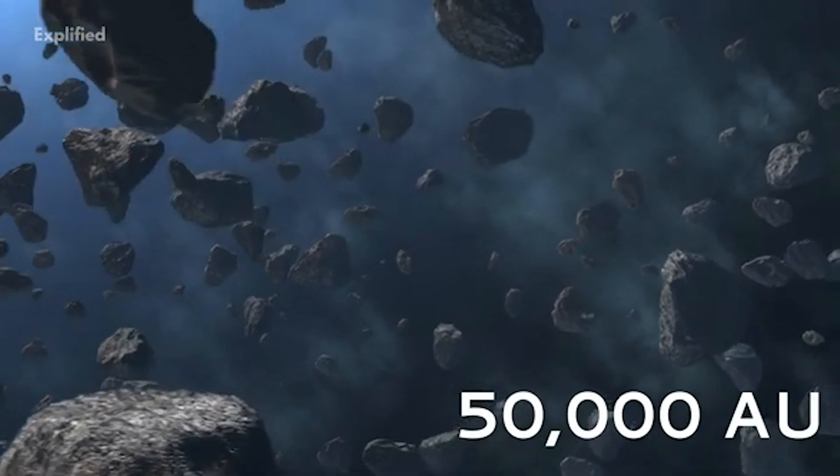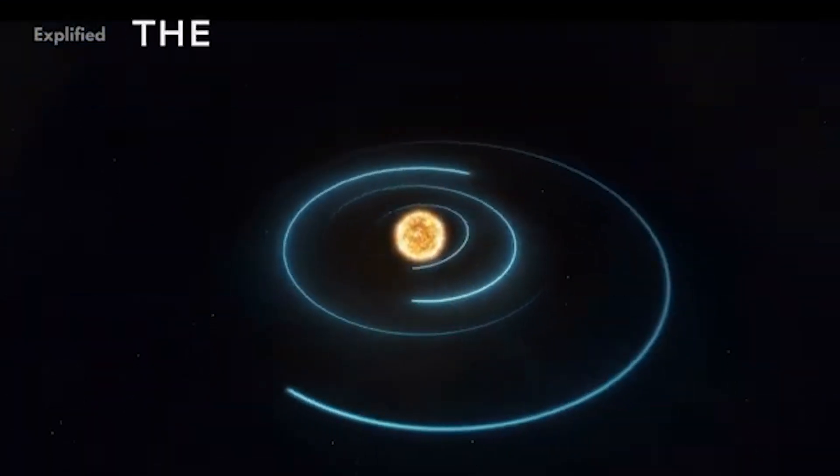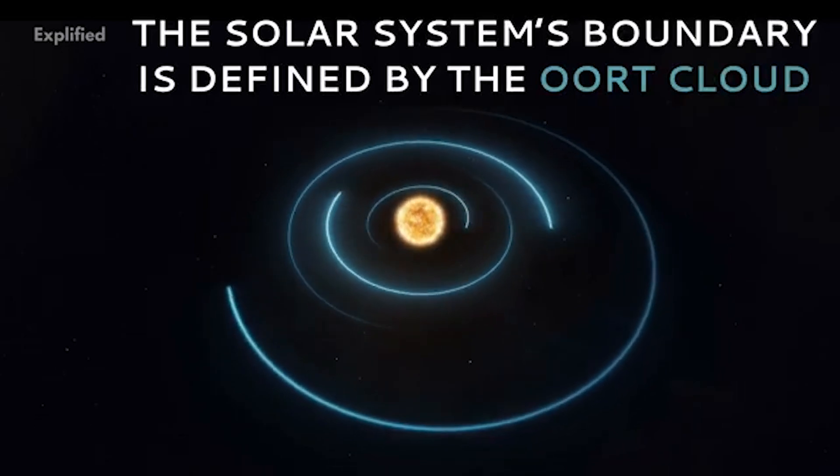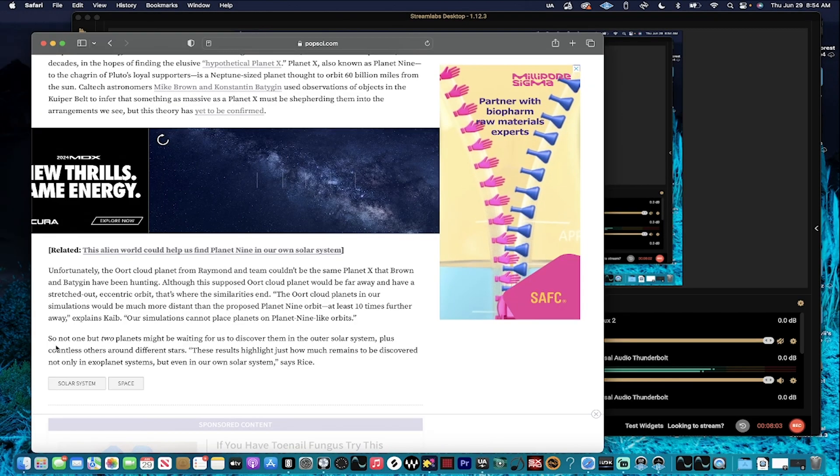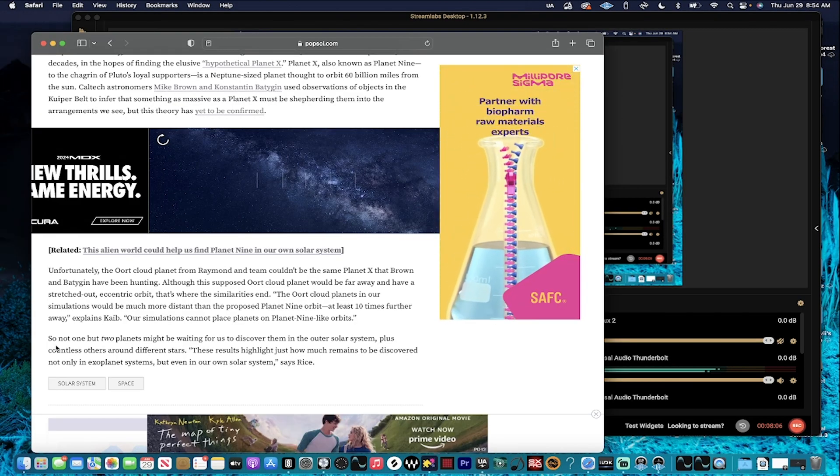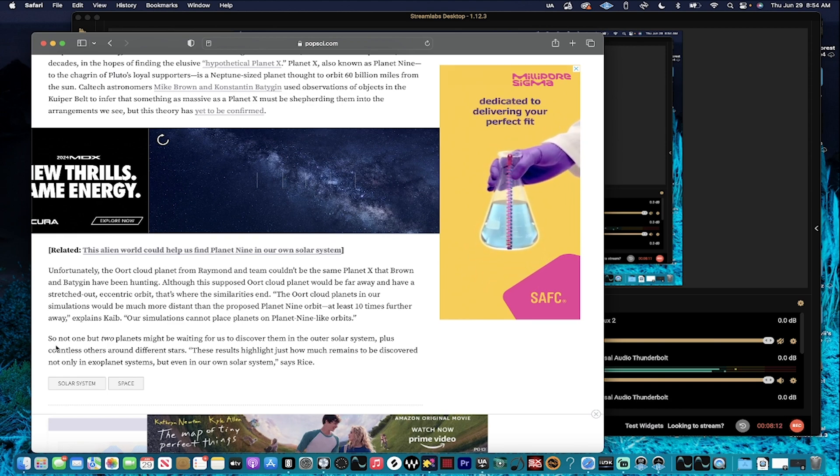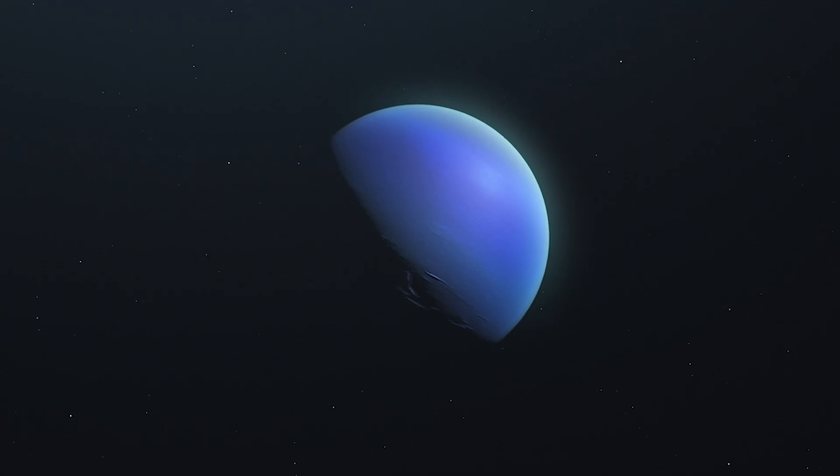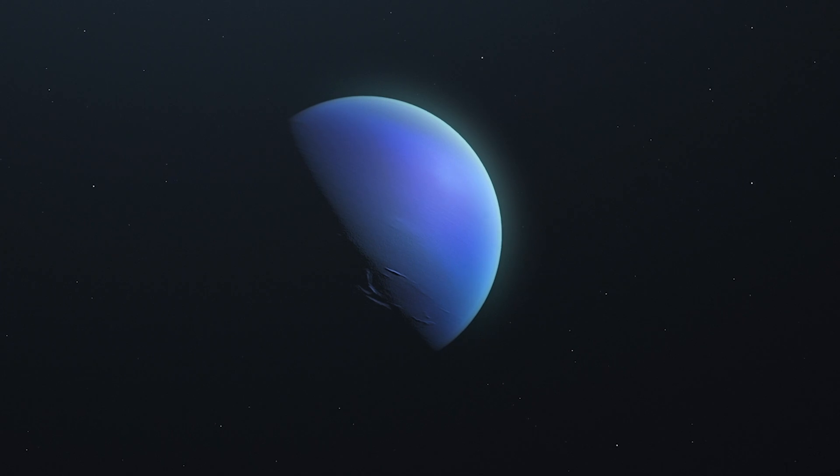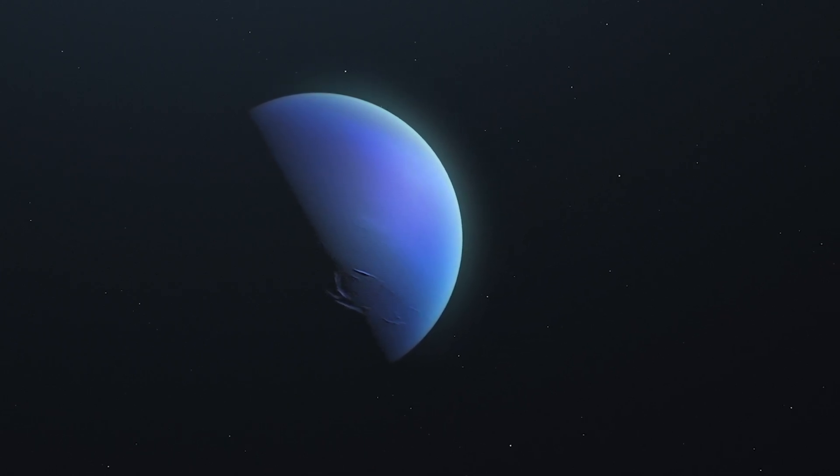They're looking for one planet. You need to be looking for 15 of them. That's why it's all funky back there. The reason why it's all funky back there is because it's been picking up. So not one but two planets might be waiting for us to discover, plus countless others around different stars.